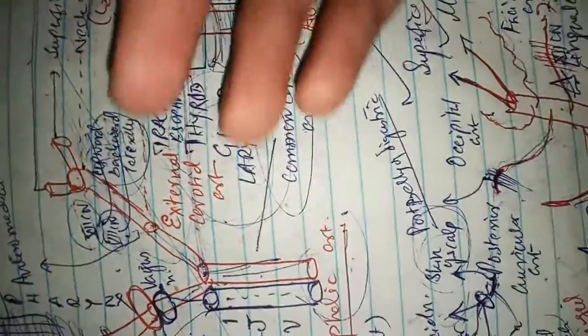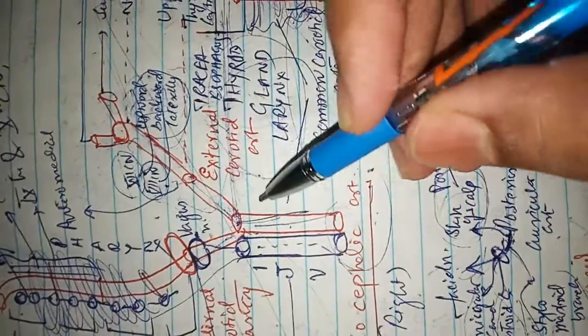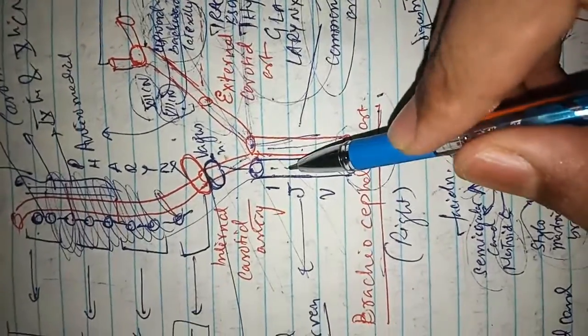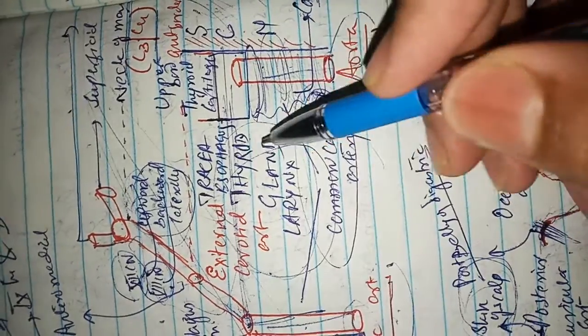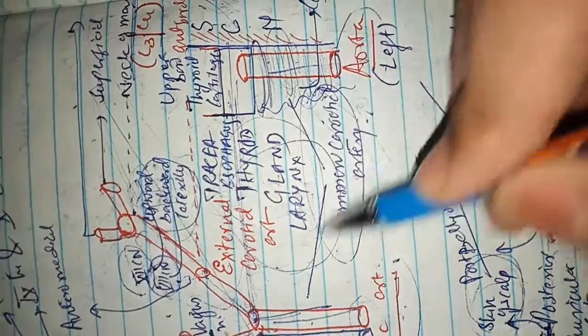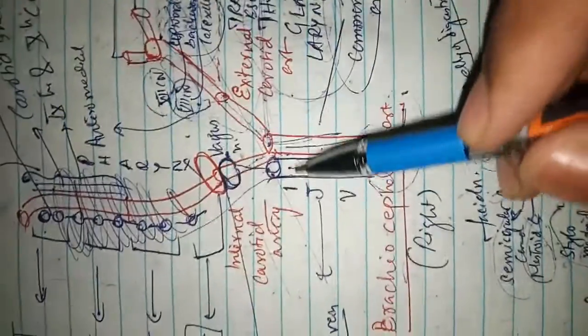Medial relations: medially there is trachea, esophagus, thyroid gland and larynx. These all will be medial to the common carotid artery.